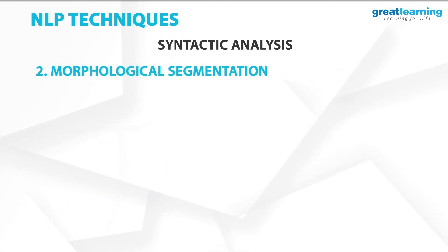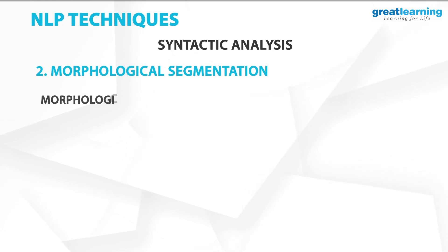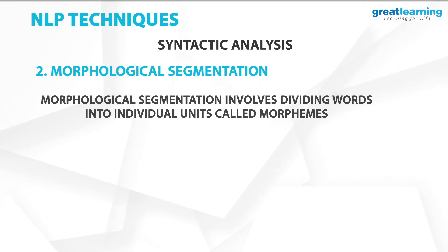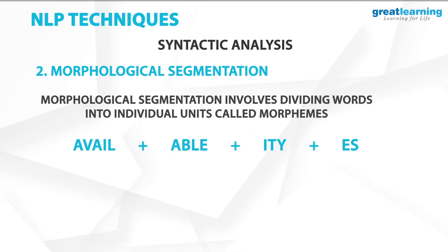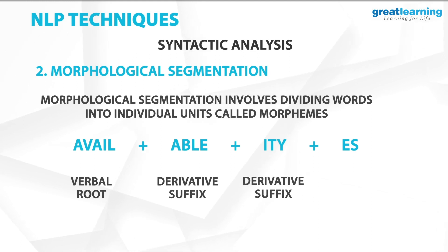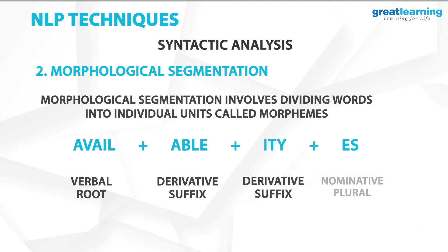The second syntax technique is known as morphological segmentation. Morphological segmentation involves dividing words into individual units called morphemes. For example, availabilities could be broken down into avail + able + ity + s, where avail is the verbal root, able is the derivative suffix which turns a verb into an adjective, ity is a derivative suffix which transforms an adjective to a noun, and s is the nominative plural.